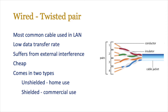Twisted pair is the most common form of cabling used in local area networks. It has quite low data transfer rates and suffers quite a lot from external interference, but it's used a lot because it's cheap. It comes in two different types: unshielded, which is more susceptible to interference and normally used in the home, and shielded, which is used in commercial situations. The cable itself has four pairs of twisted wire with a metal conductor, an insulator, and a cable jacket outside.